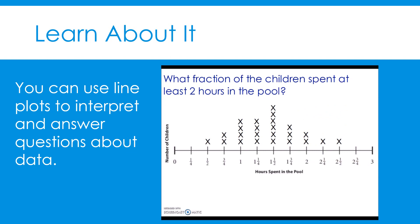Our new question is: what fraction of the children spent at least two hours in the pool? We already know that four children spent at least two hours in the pool. But how can we turn that into a fraction? There are 24 children who were surveyed, and four of them spent at least two hours in the pool. So one way we can represent that fraction is four twenty-fourths. We can also find an equivalent fraction in simplest form — that would be one-sixth. Either of these answers are correct.